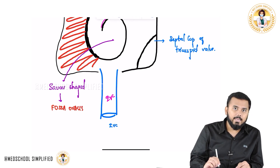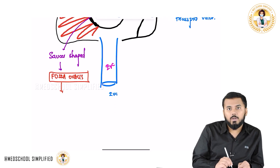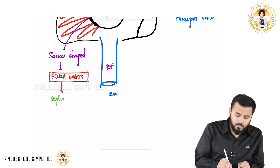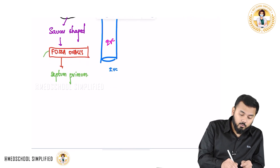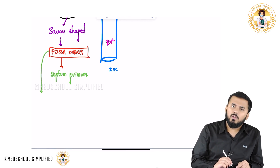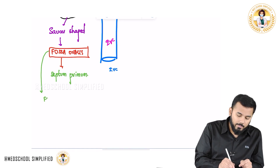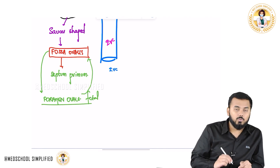In the interatrial septum we have got something called as Fossa Ovalis. Fossa Ovalis is formed by Septum Primum. During fetal life, what was it actually? It was actually the foramen ovale which has converted into Fossa Ovalis after birth. So there is something called as foramen ovale during fetal life, and after birth this foramen ovale converts into Fossa Ovalis, formed by Septum Primum.